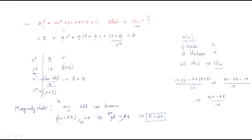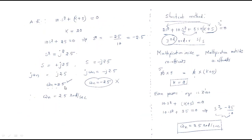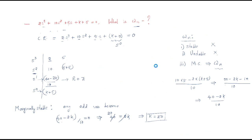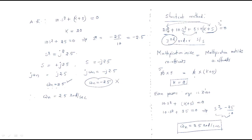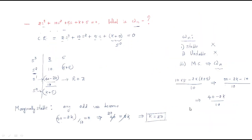To summarize: whenever ωₙ is asked directly, use the Routh-Hurwitz criteria and treat the system as marginally stable. Find k by setting the appropriate row to zero, then form the auxiliary equation from even powers to get ωₙ. For third-order systems, the shortcut method — where the product of inside (even) coefficients equals the product of outside (odd) coefficients — can be used to find k quickly, and then even-power terms give ωₙ = 2.5 rad/s. Thank you.